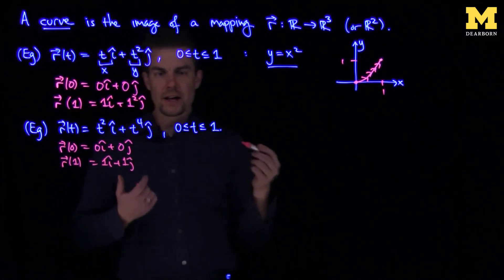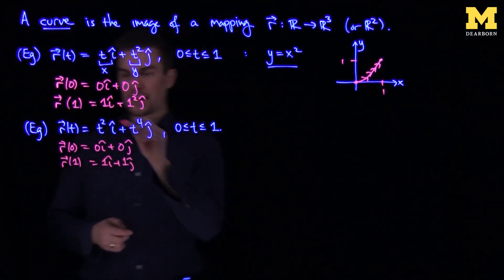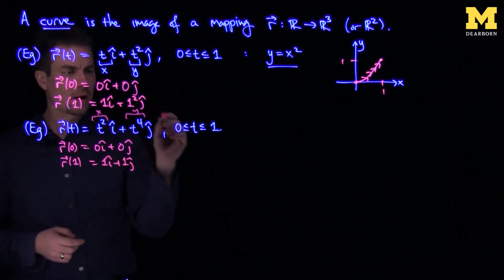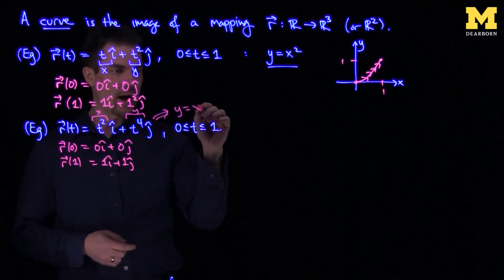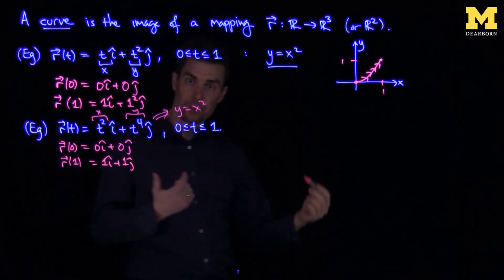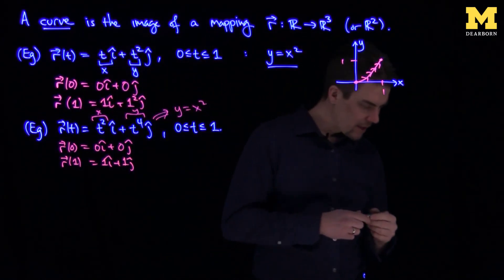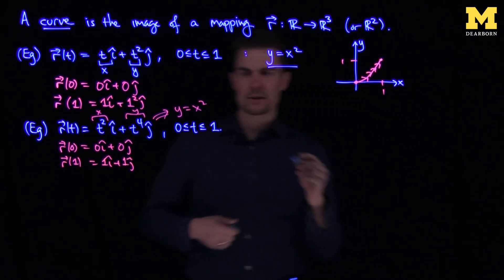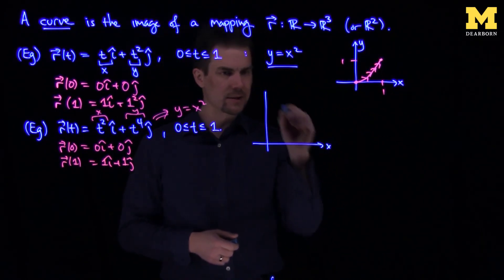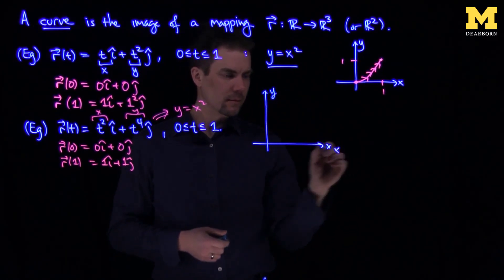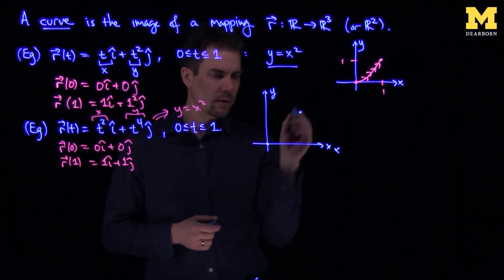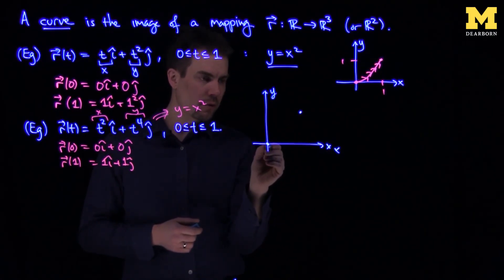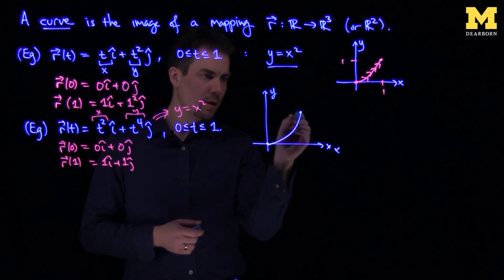So I'm starting and ending at the same points, and in fact, if this is my x over here, and this is my y over here, then on this curve we also know that y is equal to x-squared. So I'm on the same exact parabola, and so if I was to plot this curve on a graph, what I would see is the following. Here's my y-axis, here's my x-axis. I would have the exact same curve.